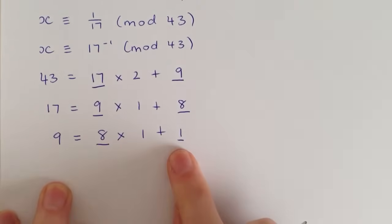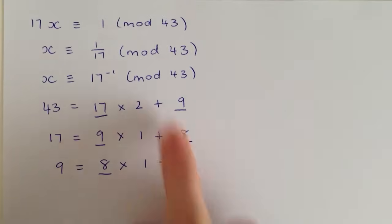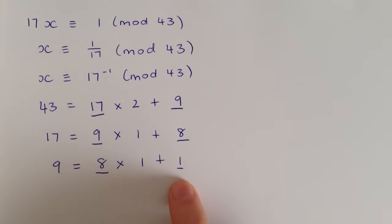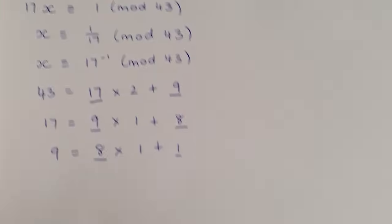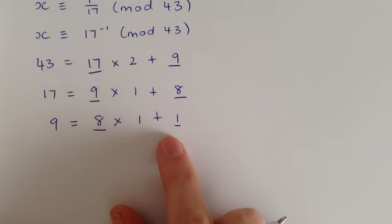Now when we get a 1 in this position, that means that the GCD of 43 and 17 is 1. We can only ever find an inverse number when this GCD is 1, otherwise you can't do it. So in this case it is 1, so we can continue. Now we want to move on to the extended Euclidean algorithm.